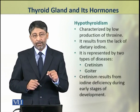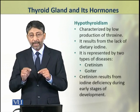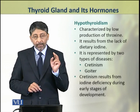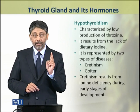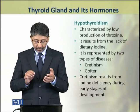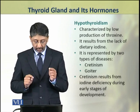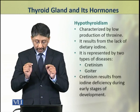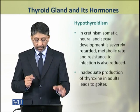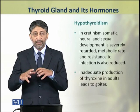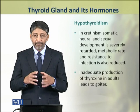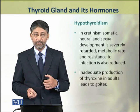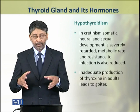Hypothyroidism, that is the production of thyroid hormones in low quantity, results in two diseases: cretinism and goiter. Cretinism results from iodine deficiency in early stages of development. In cretinism, the somatic, neural, and sexual development of a person is severely affected. Moreover, metabolic rate is reduced and resistance to disease is also reduced.